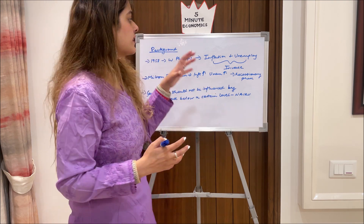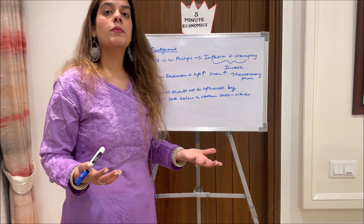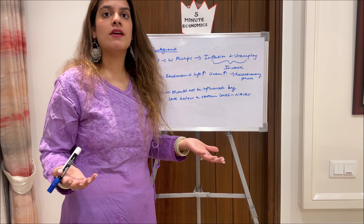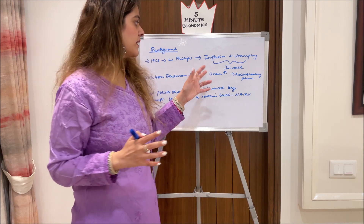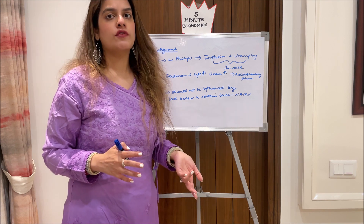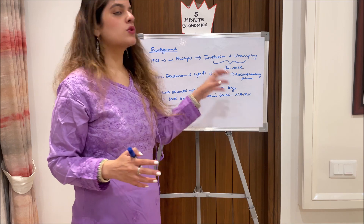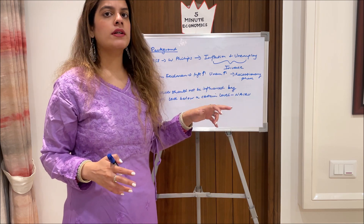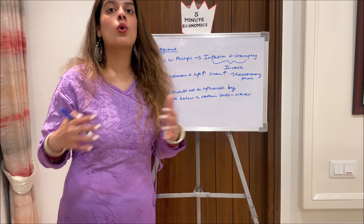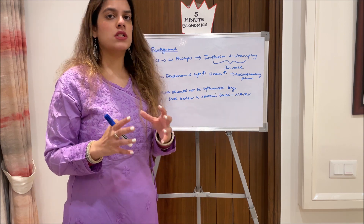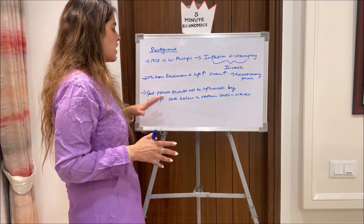This was believed to a certain extent, but during the 1970s, the economy experienced stagflation. During this recessionary phase, we saw that even when inflation was rising, unemployment was also rising — both hitting peak highs simultaneously. This challenged the Phillips Curve theory.